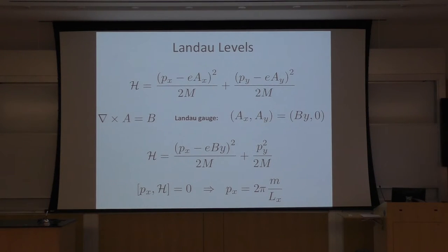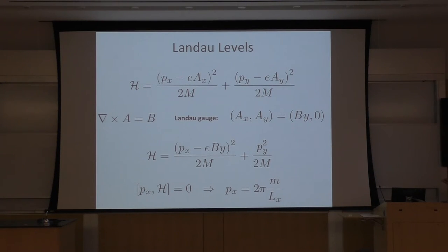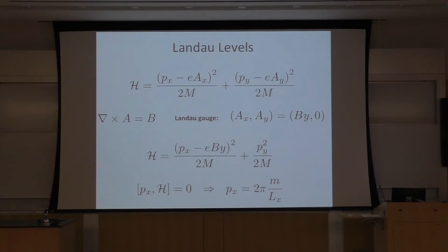The simplest way to understand this is to consider the Landau-level problem. The Hamiltonian in the presence of an external gauge field in a two-dimensional system is this. Let's imagine we have a uniform perpendicular magnetic field, so curl A equals B. We can choose a gauge such that Aₓ equals By and A_y equals zero — this is called the Landau gauge. In this gauge, the Hamiltonian has a simple form, and x doesn't show up, so Pₓ and the Hamiltonian commute with each other.